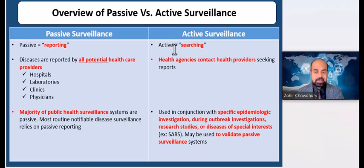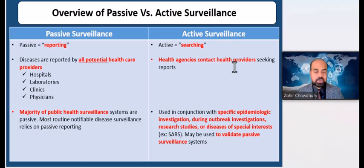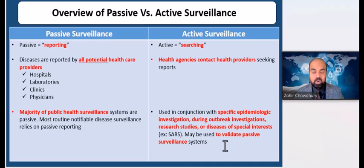On the other hand, active surveillance is essentially searching. Active systems involve regular outreach to potential reporters to stimulate and prompt the reporting of specific diseases, viruses, or injuries. Active surveillance occurs when the collection of data from the lab, physician, or other healthcare provider is initiated by the health department. Active systems are often used for brief periods for discrete purposes, such as during outbreak investigations, research studies, special time-limited events, or for diseases of special interest such as SARS.